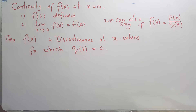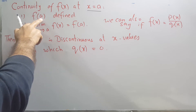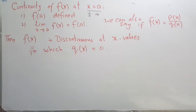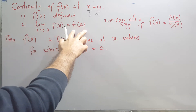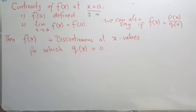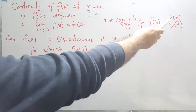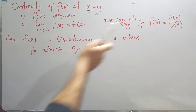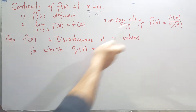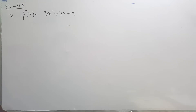In this video we will discuss continuity of a function at some point x equals a. A function is continuous at x equals a if the function is defined at that point — meaning it does not give you one over zero — and the value of f(a) is the same as the limiting value as x approaches a of f(x). In other words, if f(x) is a polynomial over a polynomial, the function is discontinuous at the x values where the denominator q(x) equals zero.